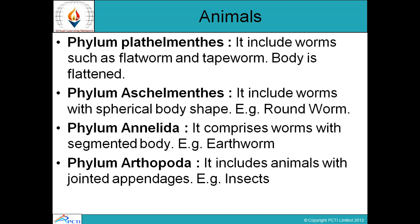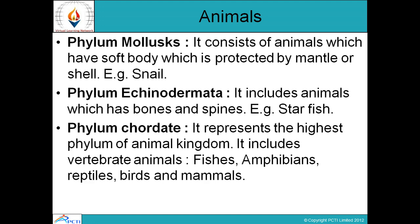Then comes phylum Platyhelminthes — it includes worms with a flattened body, such as flatworm and tapeworm. Then Nematoda — it includes worms with a spherical body shape. Then comes phylum Arthropoda — it includes animals with jointed appendages, for example insects. Then phylum Mollusca — it consists of animals with a soft body protected by a mantle or shell, such as snail.